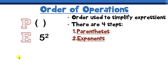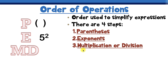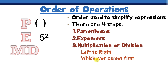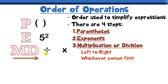Step number three actually has two letters in it — MD — and MD stands for multiplication or division. This step is tricky because it has two things in it, but when you get to step three you always work from left to right, doing whichever comes first. So if you see division first, you do division first, and if you see multiplication first, that's what you do first.